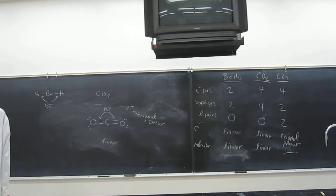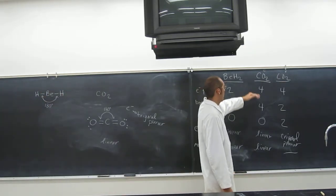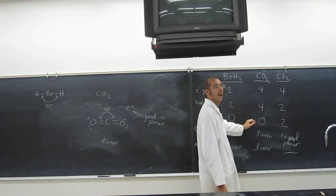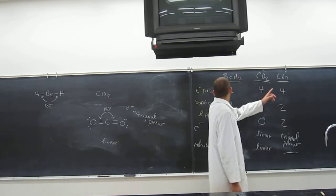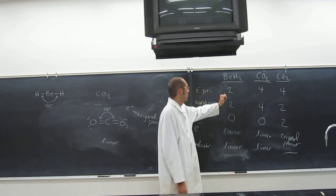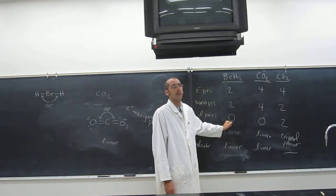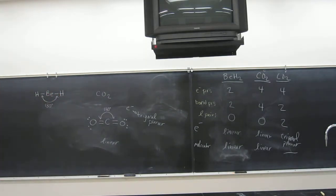You should be able to see patterns. Four bonding pairs, zero lone pairs — that's almost certainly carbon. Four electron pairs, two bonding, two lone pairs — that's oxygen. Four, three, one — that's nitrogen. Two, two, zero — that's beryllium. Three, three, zero — that's also beryllium-like. You can see the pattern on the periodic table.